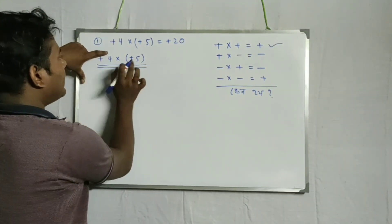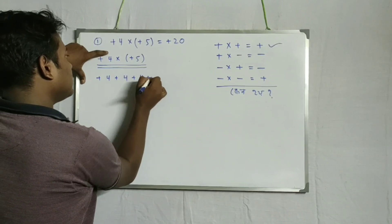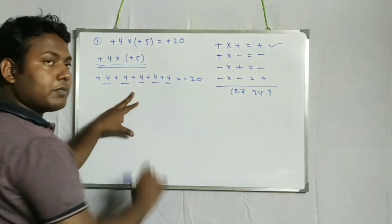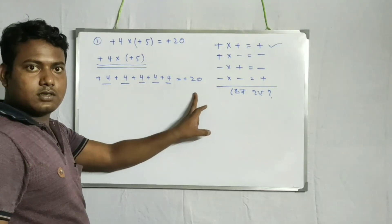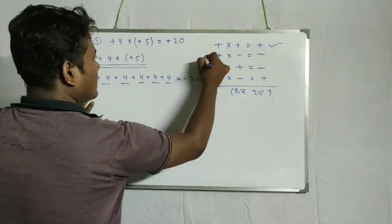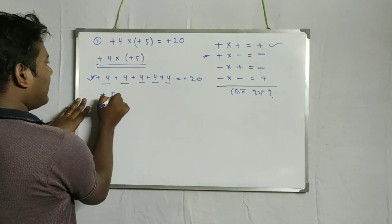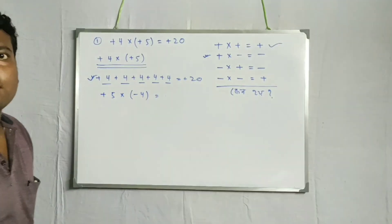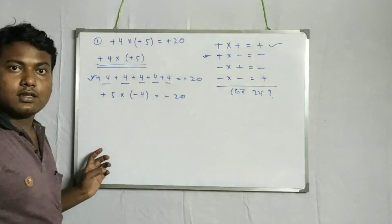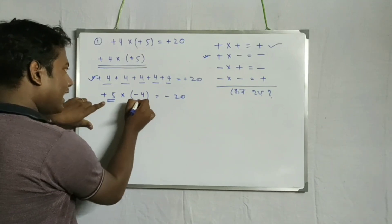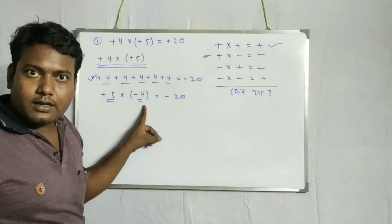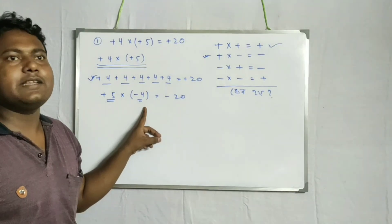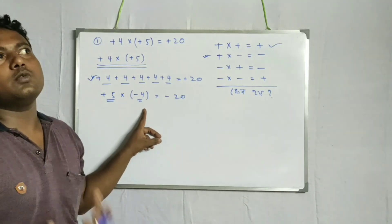This means plus 5 times. You can see this — 4, 8, 12 — this means that plus 5 times minus. Which means in parallel: plus 5 into minus 4 is minus 20. How much is it? How much is it?